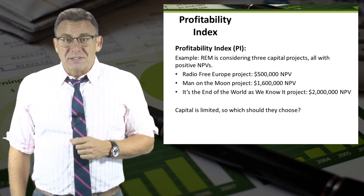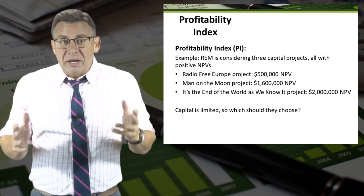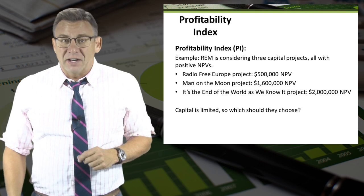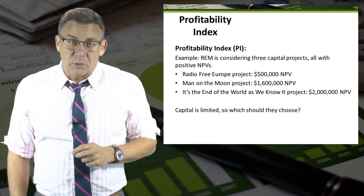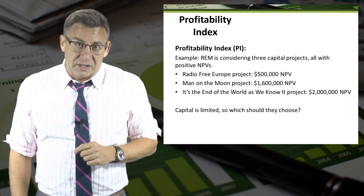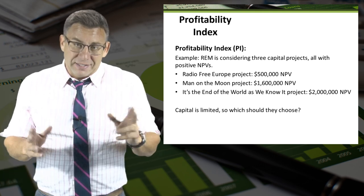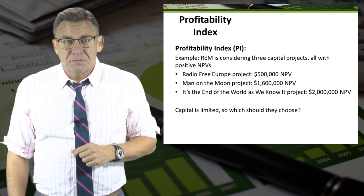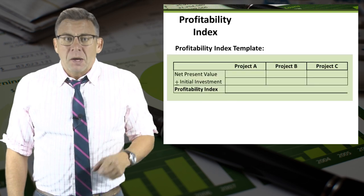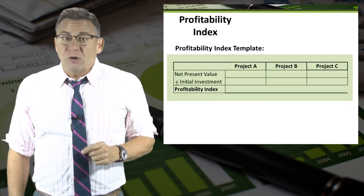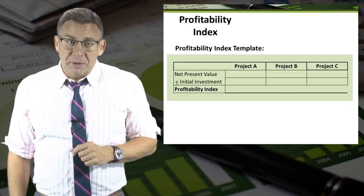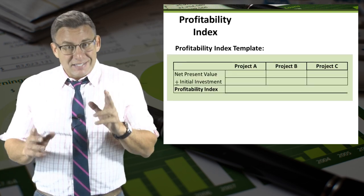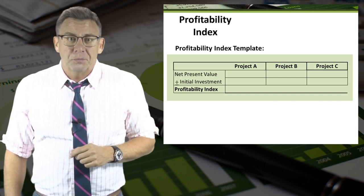Based on the net present values, it appears that we should choose the It's the End of the World as We Know It project, which has a net present value of $2 million. But perhaps we should apply the Profitability Index to these projects and see if that is true.